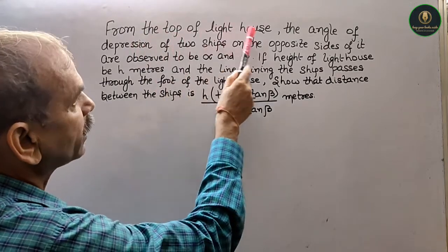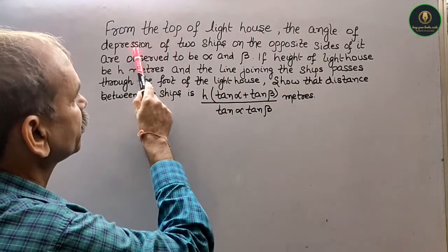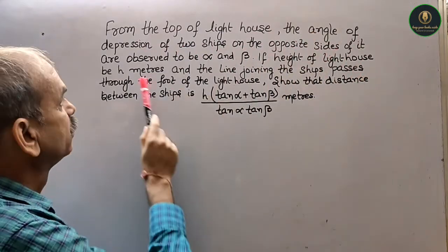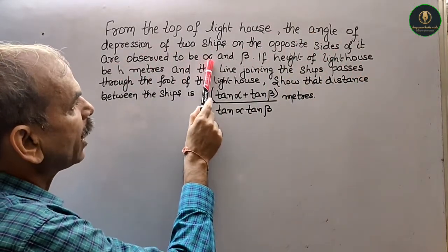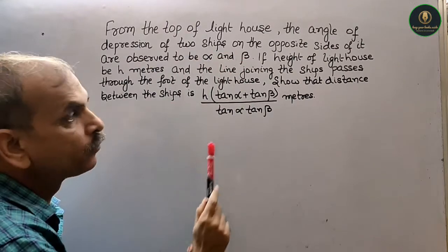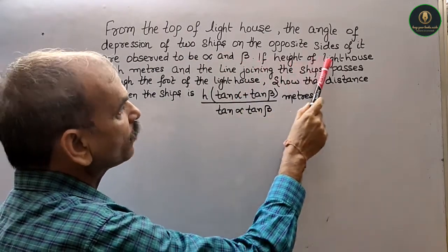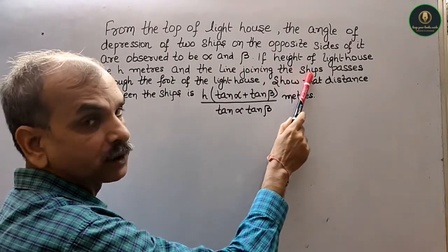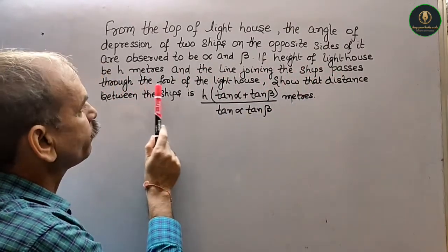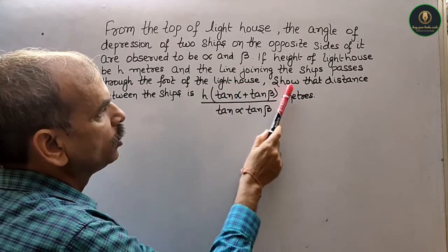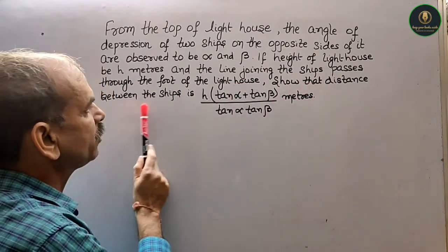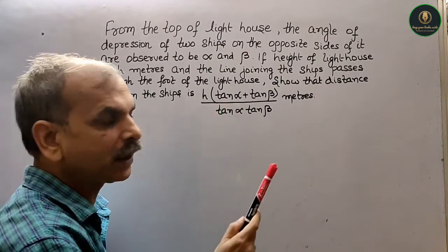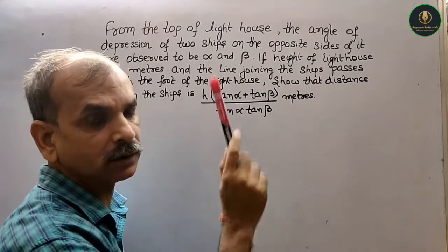From the top of the lighthouse, the angle of depression of two ships on the opposite sides of it are observed to be alpha and beta. If the height of the lighthouse is h meters and the line joining the ships passes through the foot of the lighthouse, show that the distance between the ships is h(tan alpha + tan beta) / (tan alpha · tan beta) meters.